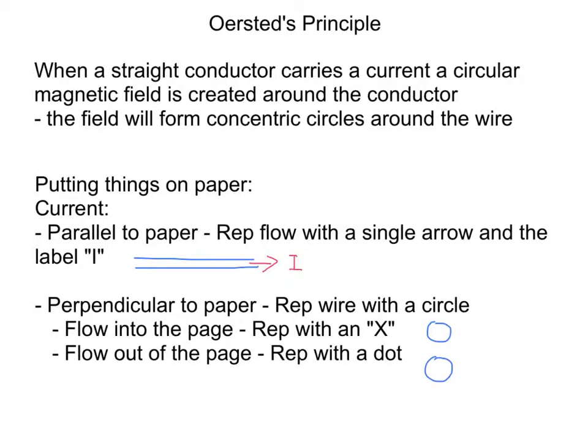But we also might want to represent that the wire is perpendicular to the paper. So we're going to do that using a circle. I've drawn a couple circles there, because we need to have two different ways. One way is to have the flow going into the page. If that's the case, we represent that flow with an X in the middle of our wire, showing it's going into the page. The other way is the flow out of the page. In that case, we would use a dot in the middle of our circle there.